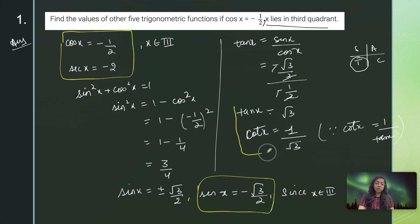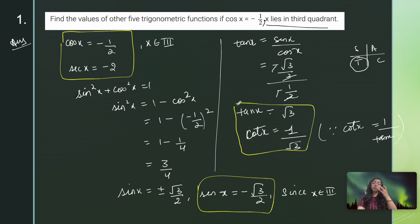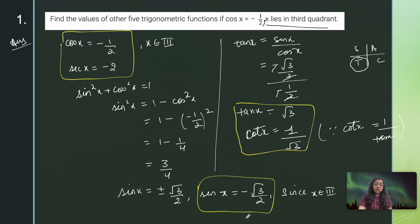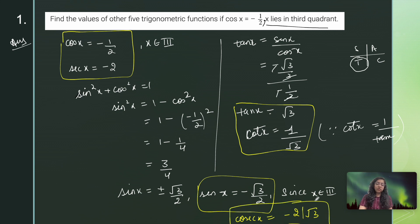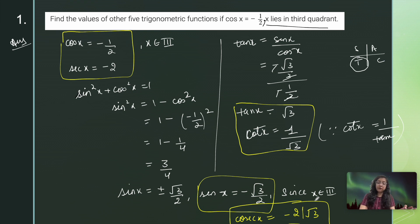The only remaining function is cosecant. Cosec x = 1/sin x, so cosec x = 1/(−√3/2) = −2/√3. So I now have all 6 trigonometric functions: cos x = −1/2, sec x = −2, sin x = −√3/2, tan x = √3, cot x = 1/√3, and cosec x = −2/√3.